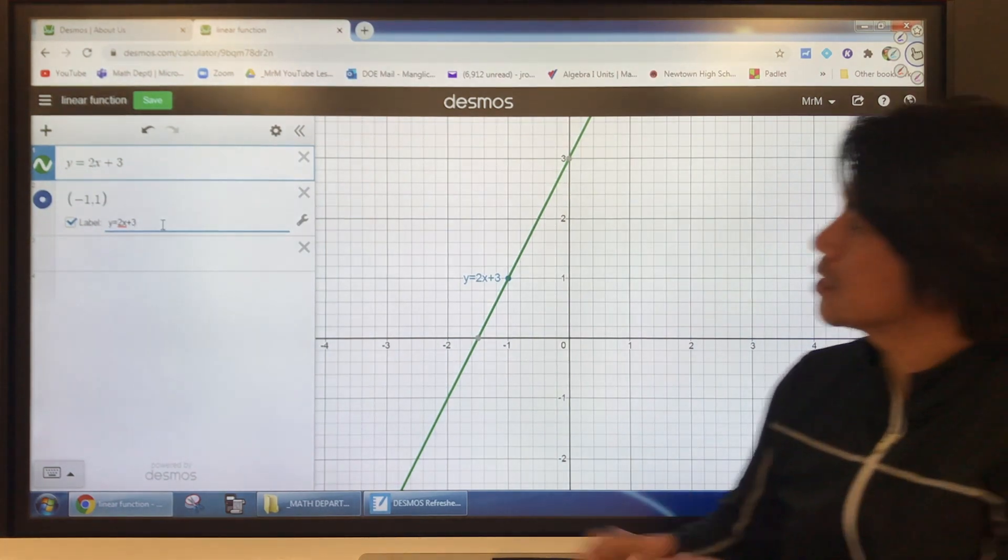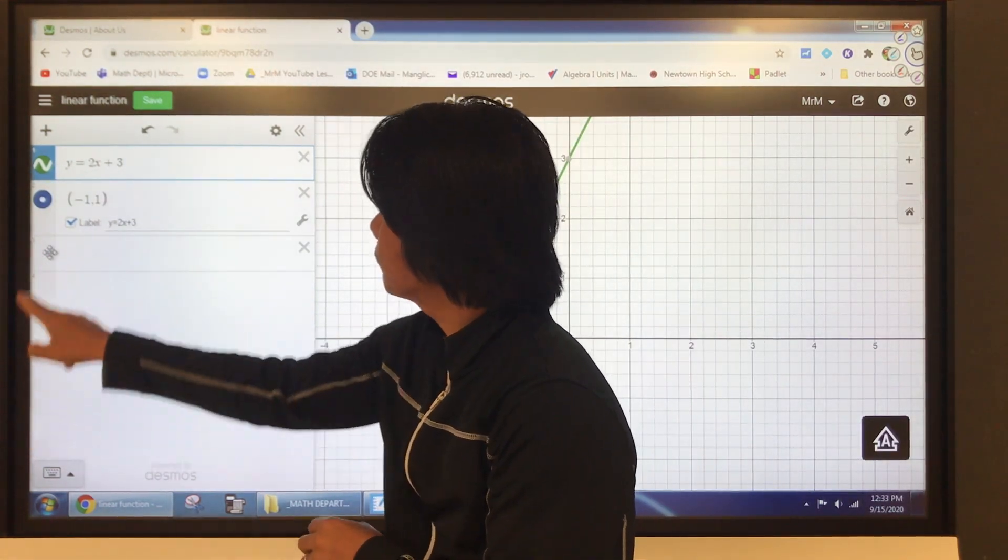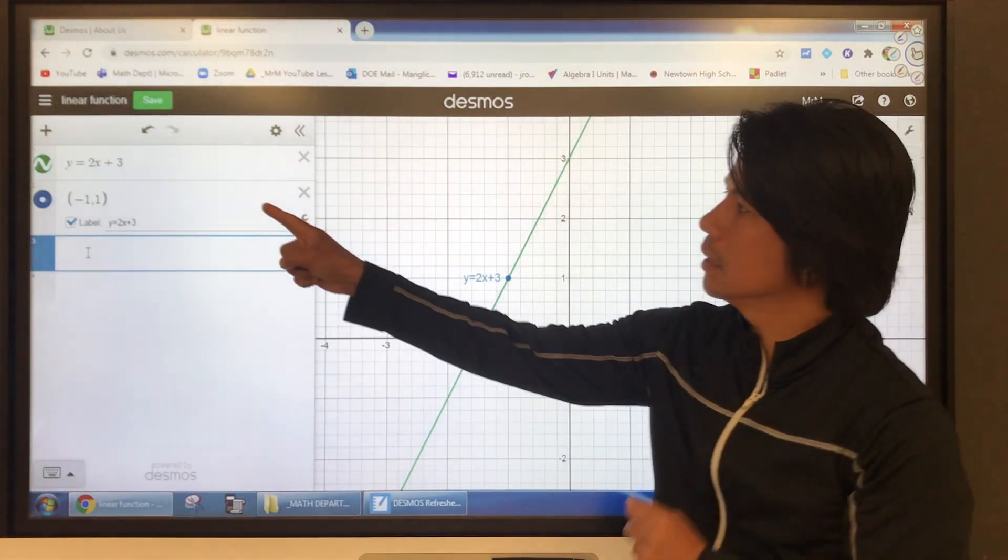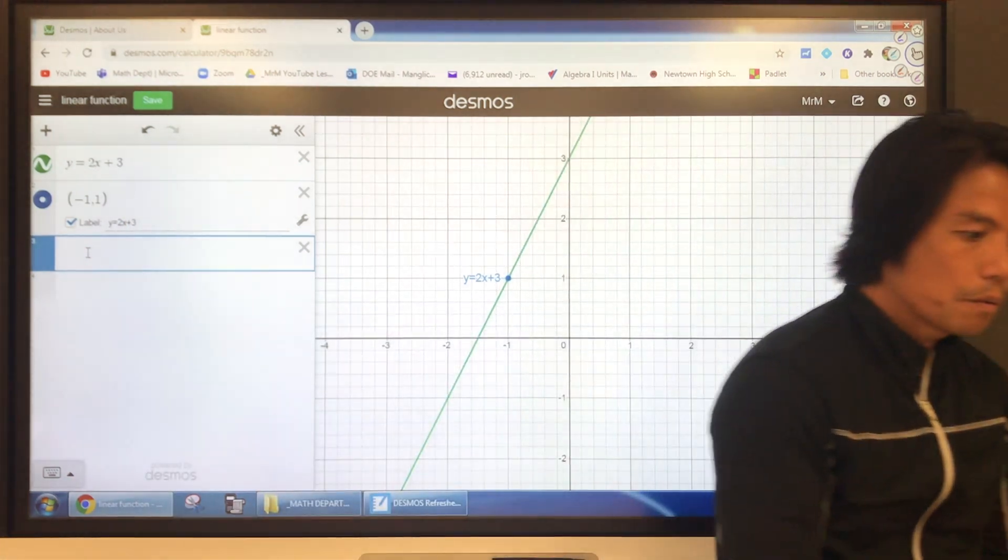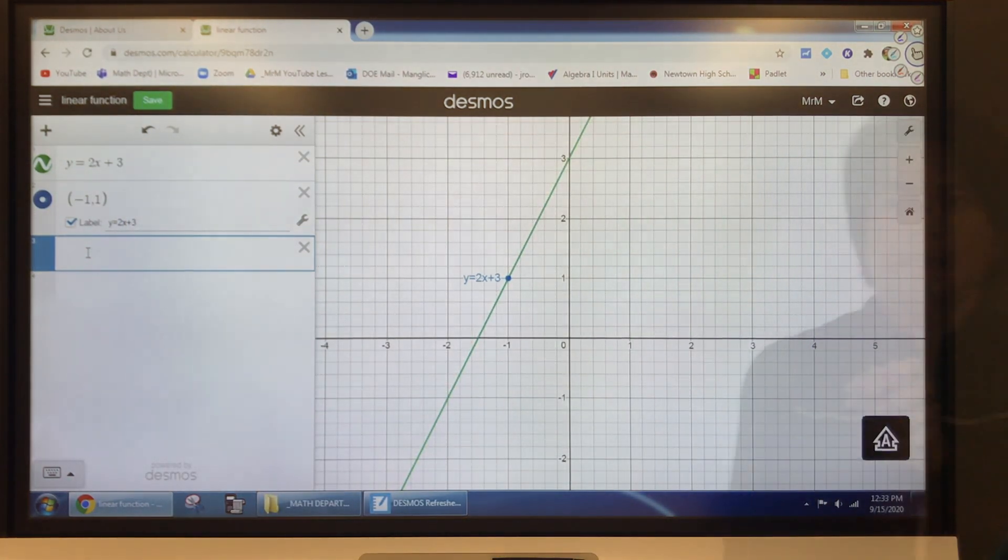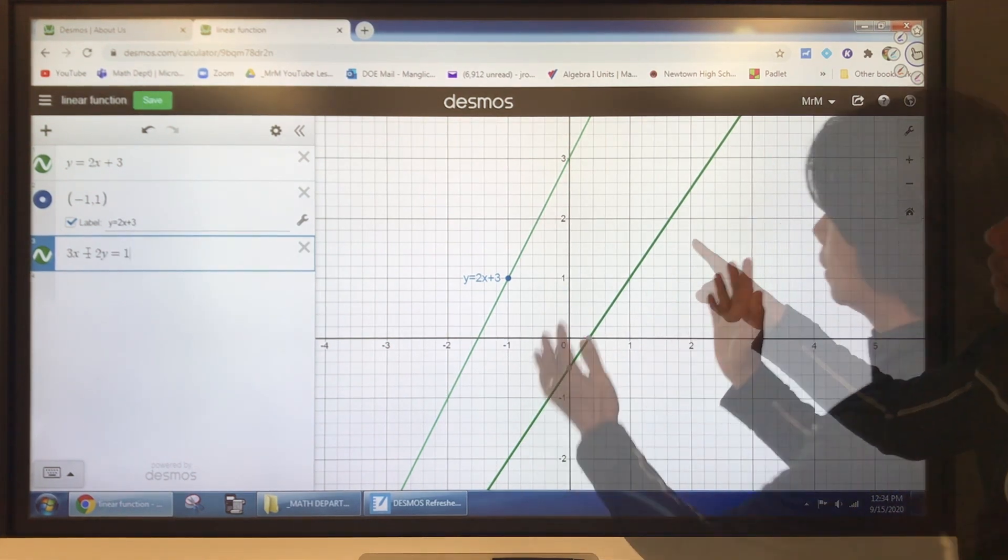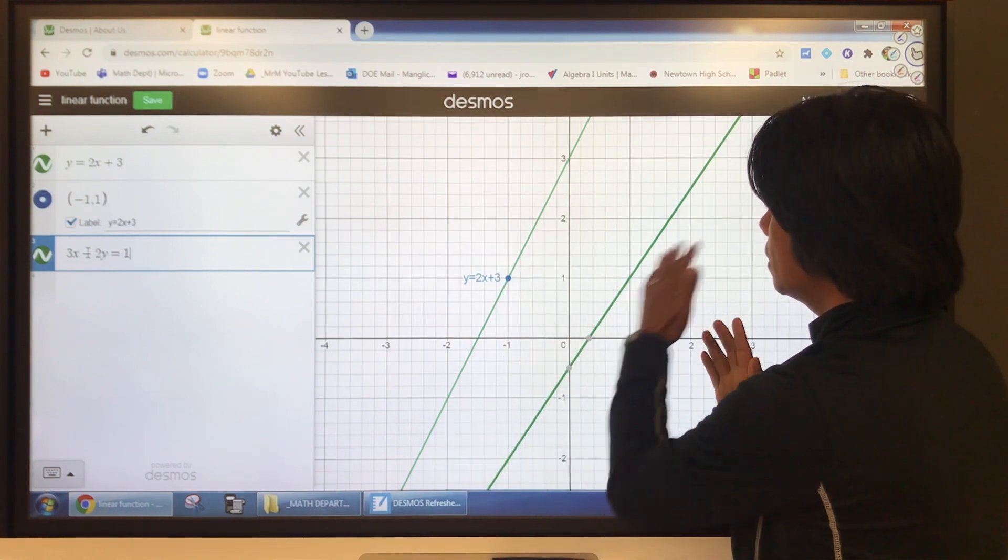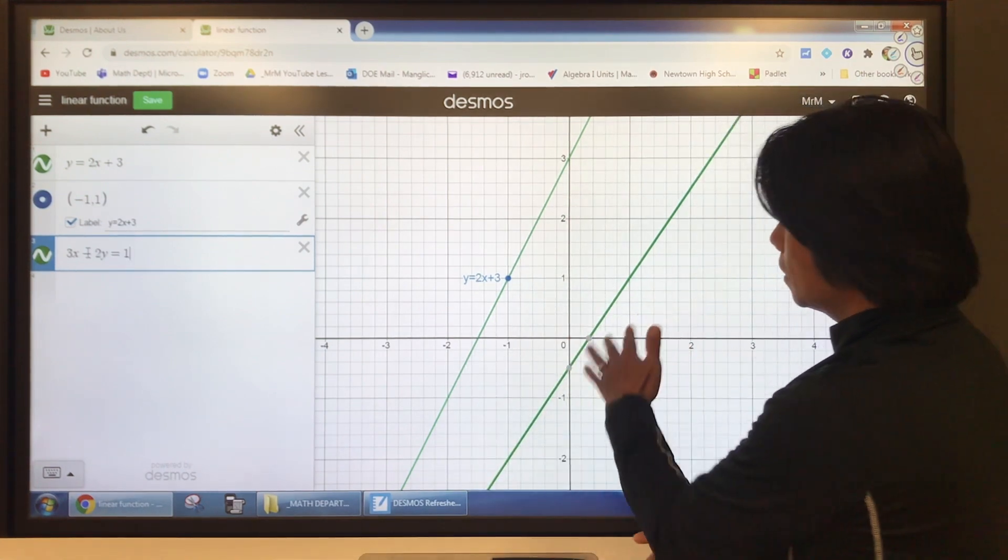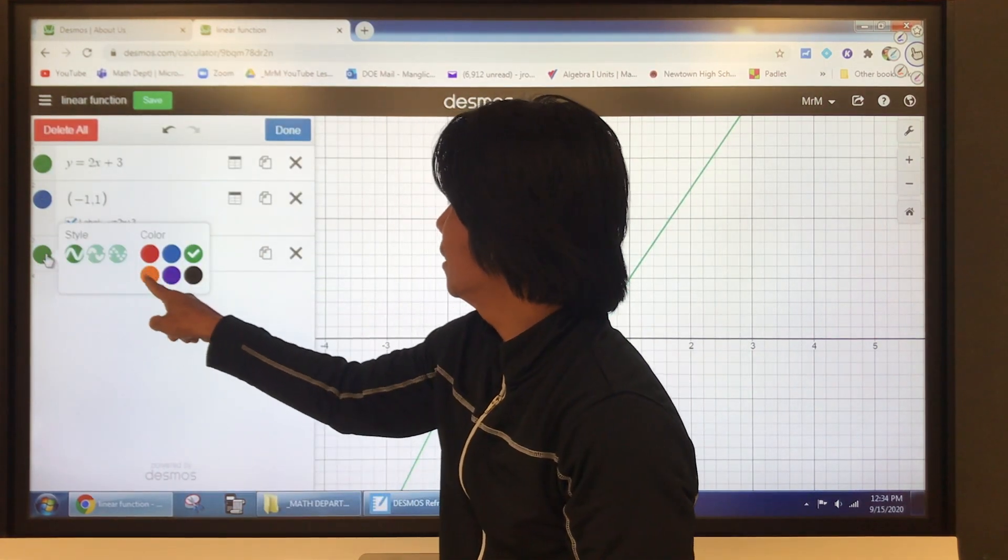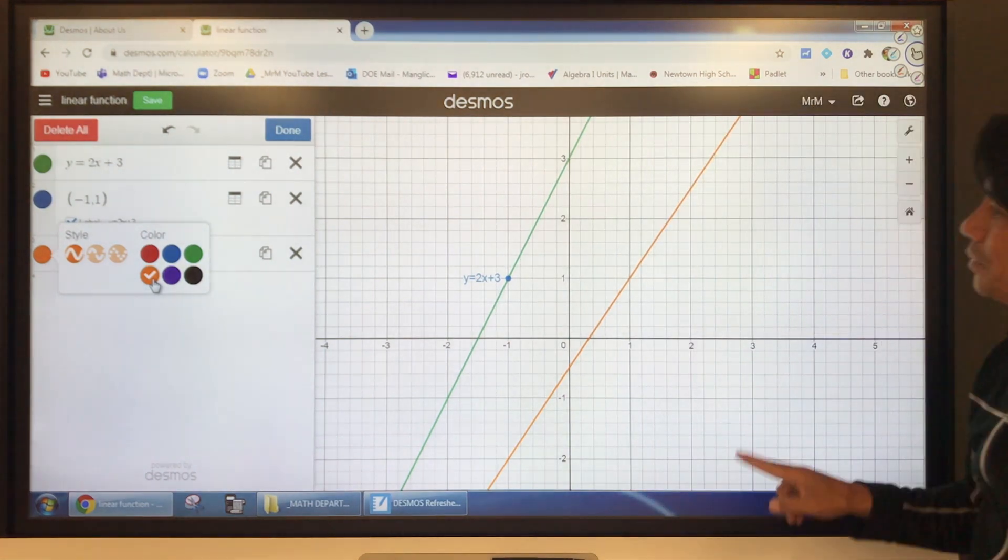Now, what if I have another function to graph on the same grid? Let's go to the third one. If I say to you, let's say this is the slope-intercept form, right? If I want to graph, let's say, 3x minus 2y equals 1. There you have it. This is the second line. We don't want to get confused with this function and this. The second function, there you go. So if I want to change that to, let's say, orange. There we go.